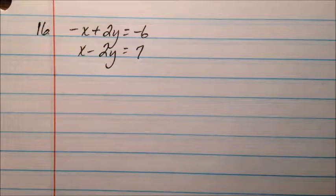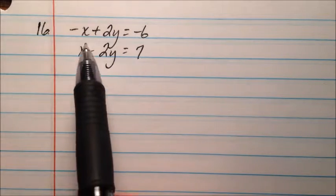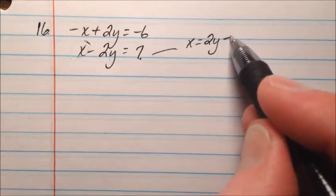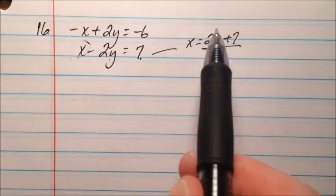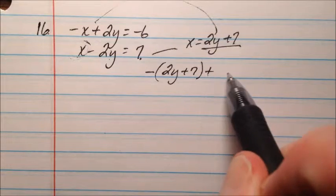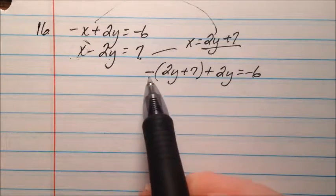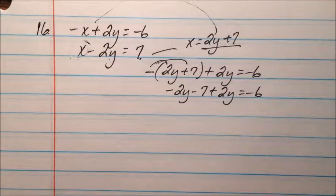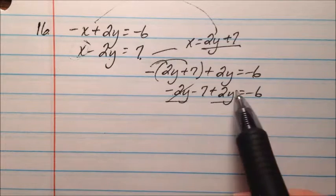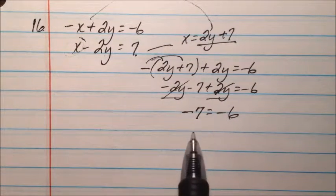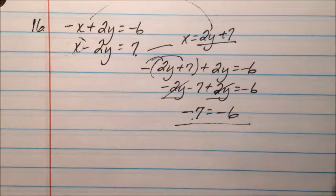Number 16 is the final problem: negative x plus 2y equals negative 6, and x minus 2y equals 7. We can solve for x in the second equation by adding 2y to both sides: x equals 2y plus 7. Substituting into the first equation gives negative the quantity 2y plus 7 plus 2y equals negative 6. Distributing the negative gives negative 2y minus 7 plus 2y equals negative 6. The negative 2y and positive 2y cancel, leaving negative 7 equals negative 6.